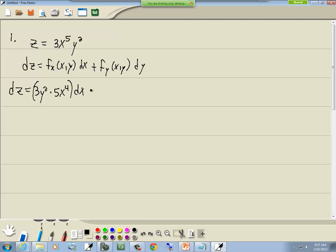Plus then the partial with respect to y. We treat the 3 and the x to the 5th as constants so they just stay and we take the derivative of y which gives us 2y, then we put dy on. So that gives us 15x to the 4th y squared dx plus 6x to the 5th y dy. And that's our answer.